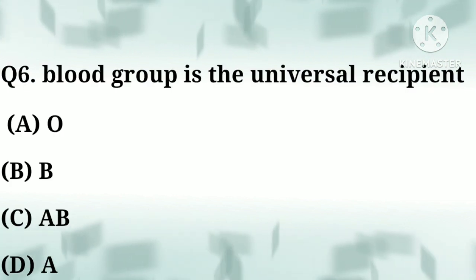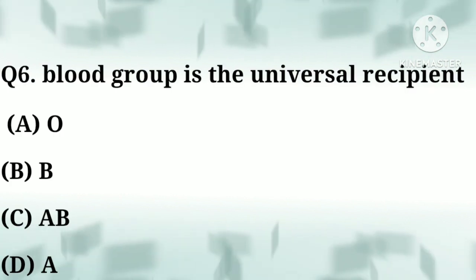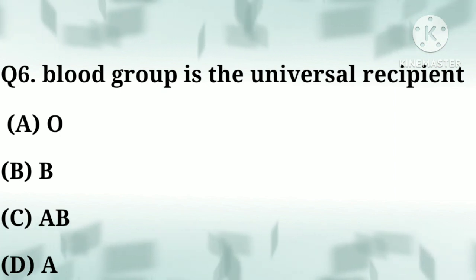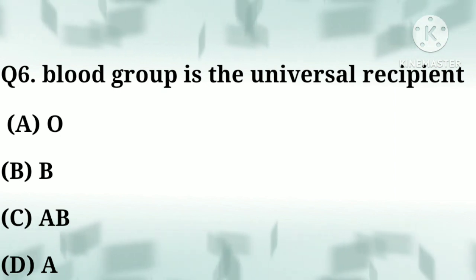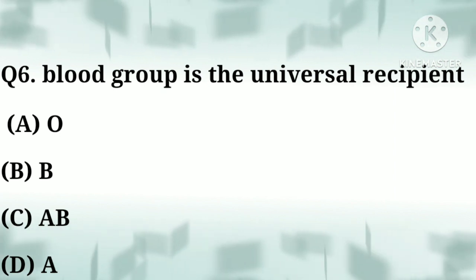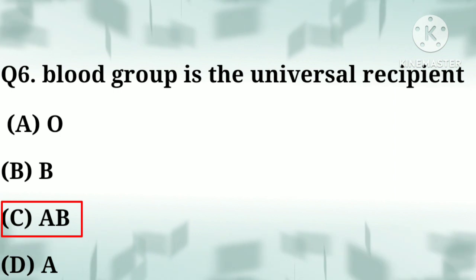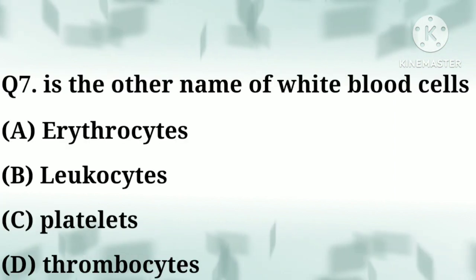Question number six: which blood group is the universal recipient? Option A: O, option B: B, option C: AB, option D: A. Correct answer: option C, AB.